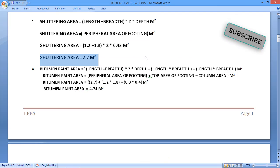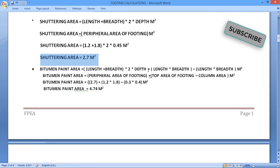For that, we'll get the formula like this: length plus breadth times 2 times depth, that is the four side area, plus length times breadth top area of footing, minus length times breadth column area.